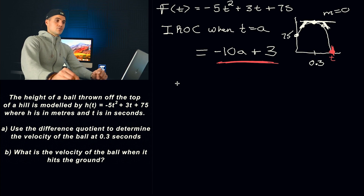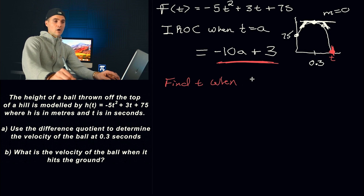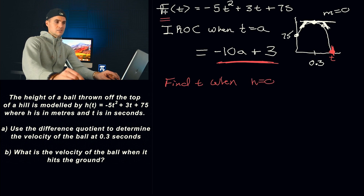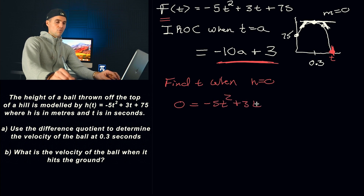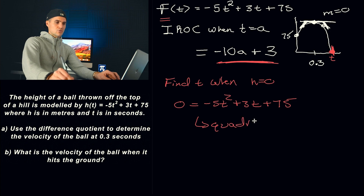First we have to find t when the ball hits the ground. It hits the ground when the height equals zero — when F of T equals zero. So we plug in zero and solve for t. This doesn't factor smoothly, so we put it through the quadratic formula.